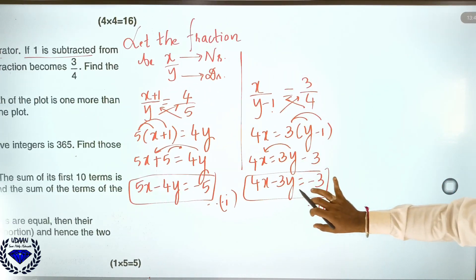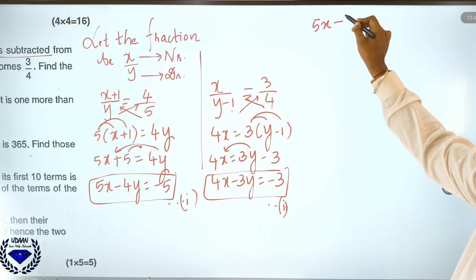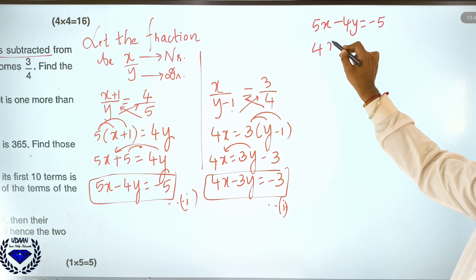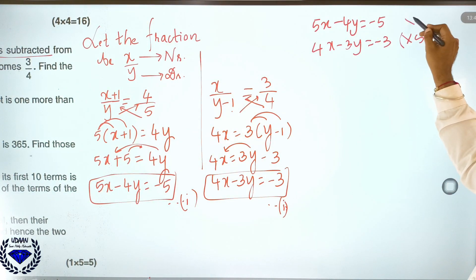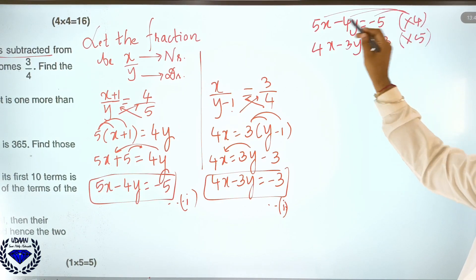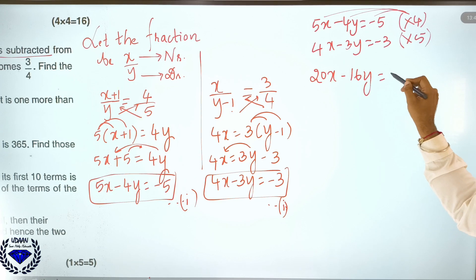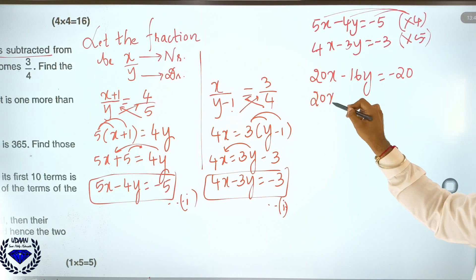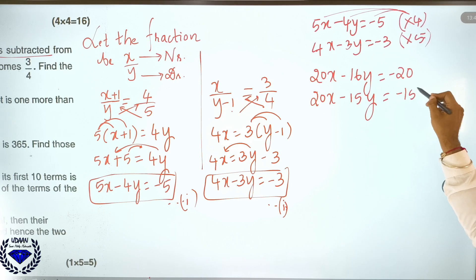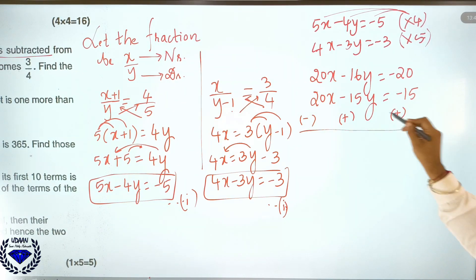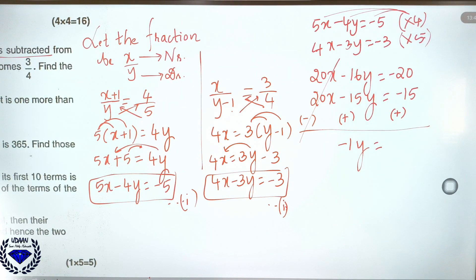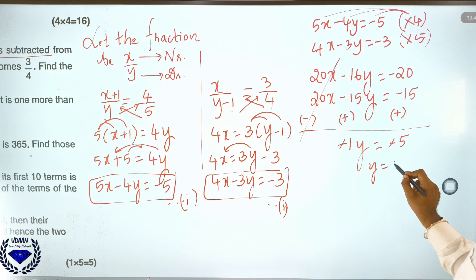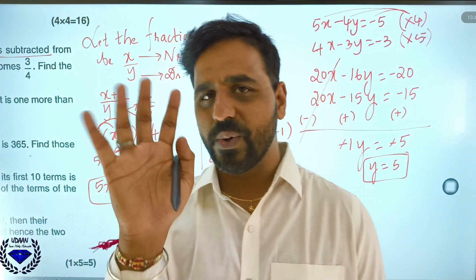Using the elimination method on the two equations — 5x − 4y = −5 and 4x − 3y = −3 — multiply the first by 4 and the second by 5. After multiplying: 20x − 16y = −20 and 20x − 15y = −15. Subtracting gives −16y + 15y = −20 + 15, so −y = −5, therefore y = 5.